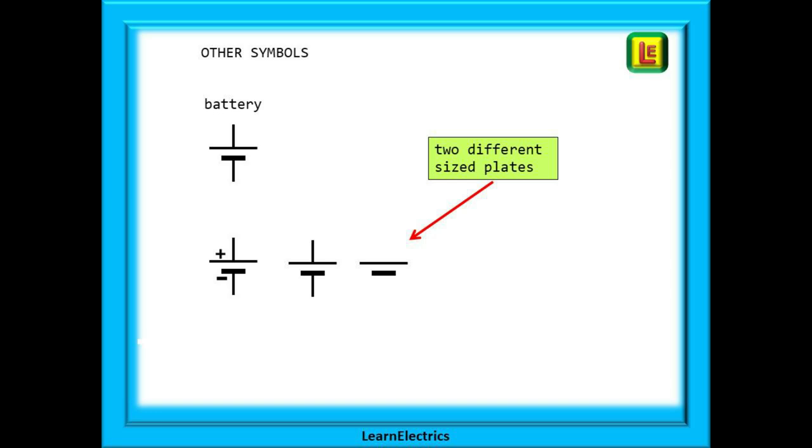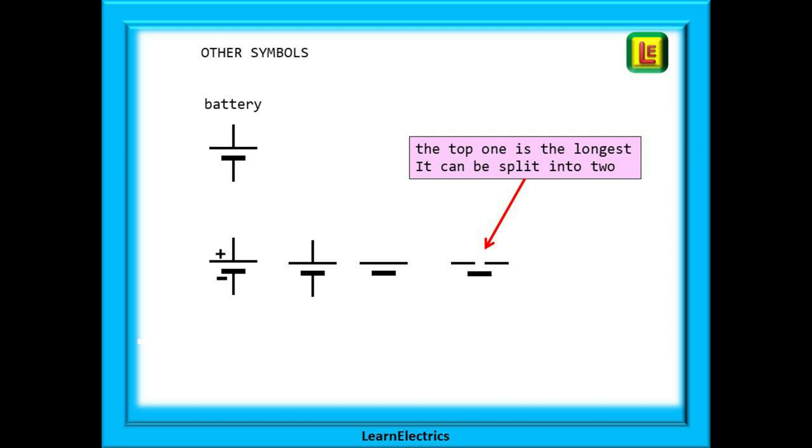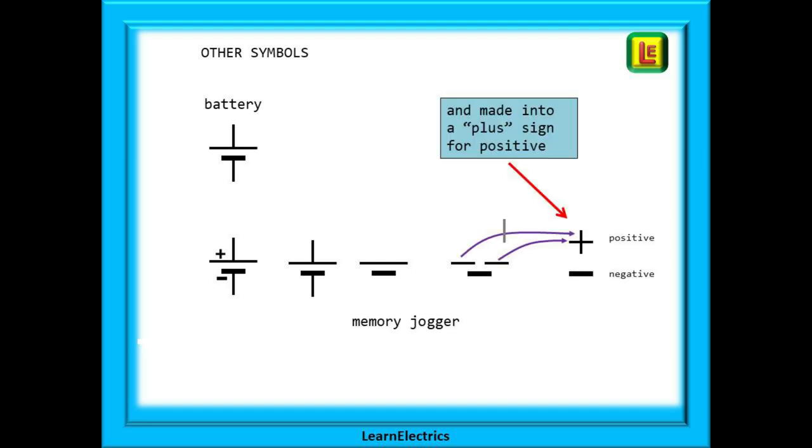This is where memory joggers come in very useful and for me personally I have used them all through my career and the more stupid a memory jogger is the greater the chance of you actually remembering it. The longer top plate can be split into two shorter plates that are the same length as the short lower plate. And now if we rotate just one of the split plates we can make a cross with the other half.